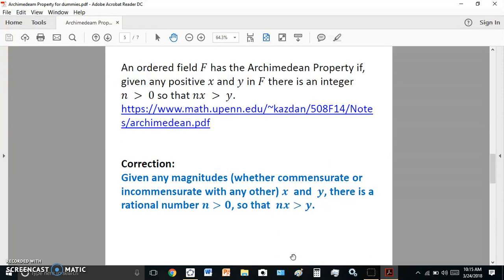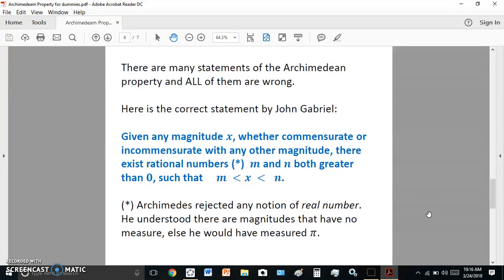This one here is the most highfalutin one, really an idiot from some University of Pennsylvania, I think, called Kazdan. So he says, given an ordered field F, it has a property. If given any positive X and Y in F, there is an integer N greater than 0, so that NX is greater than Y. Rubbish. The correct statement is, given any magnitudes X and Y, there is a rational number N greater than 0. Well, the Greeks didn't actually use 0, but I'm actually adding this to correct his statement, so that NX is greater than Y. That is the correct statement.